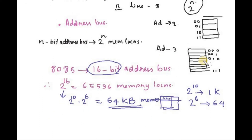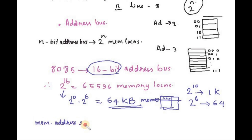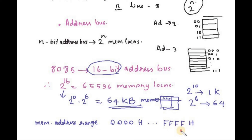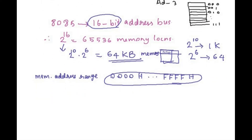The memory address range of the 8085 is from 0000H to FFFFH in hexadecimal representation. This covers the full range of memory addresses accessible by the processor.